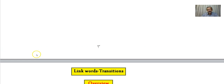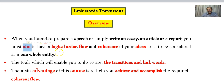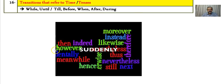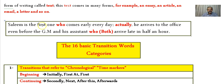Let's revisit the overview. Why link words and transitions? Imagine you are about to deliver a speech or write an essay, article, or report. Your main aim is to have a logical order, flow, and coherence of your ideas — because you want your ideas to be considered as one whole entity. Now imagine reading those four sentences separately and compare that experience to reading one single complex sentence.